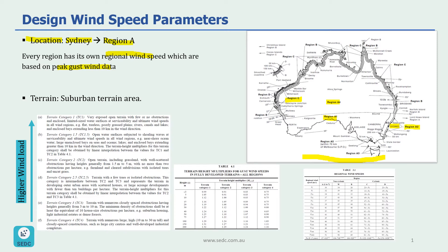Now that we know our region, we can look at Table 3.1, and if we know our return period for our wind, we can get the regional wind speed. To calculate this return period we need to do some calculations, which I'm going to explain in more detail in the next few slides. But let's assume our return period is 1000 years and we know our region is A, so our regional wind speed would be 46 meters per second.